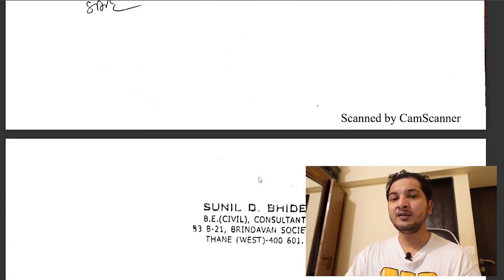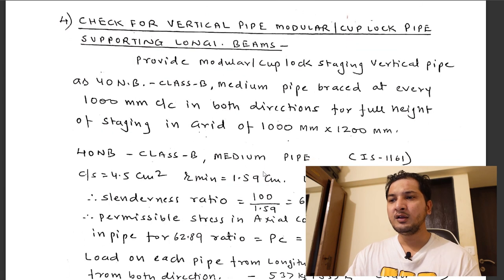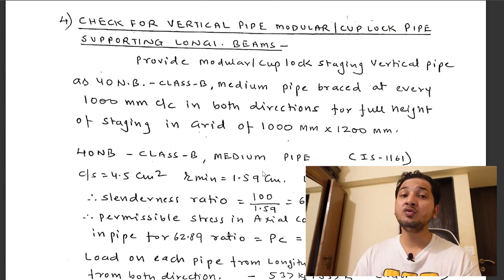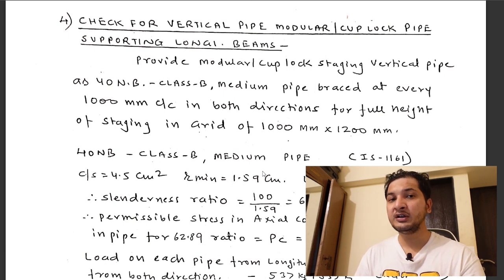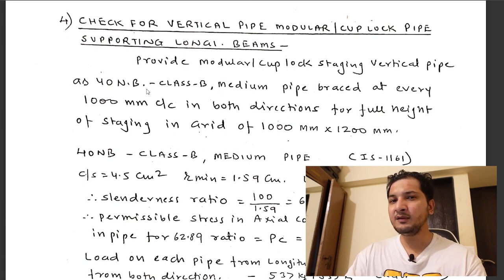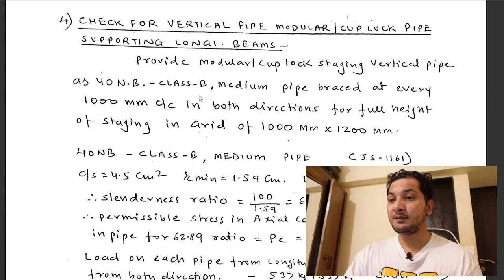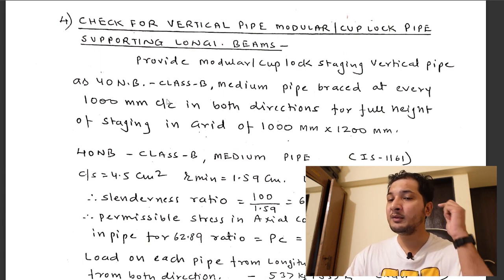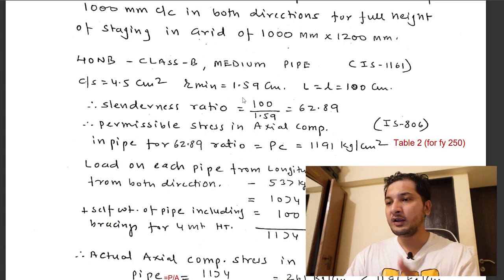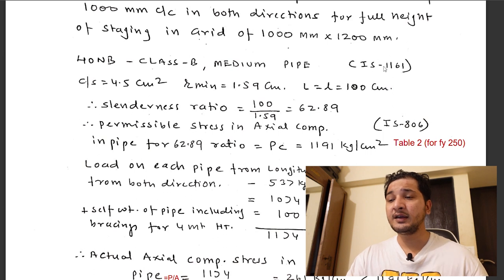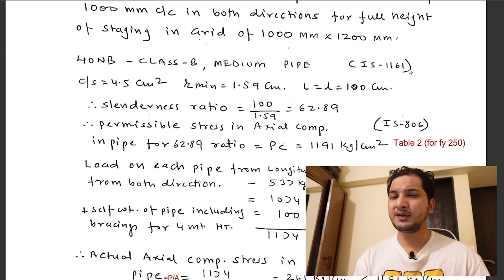The last step is designing the vertical cup locks, which are checked in compression rather than bending. We provide modular cup lock staging verticals as 40 NB (nominal bore) Class B pipes, commonly used in shuttering systems, with a grid of 1000 mm × 1200 mm. Details such as cross-sectional area and r_minimum are obtained from IS 1161 (tubes), from which we also get the permissible axial compression.